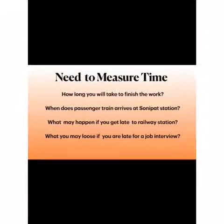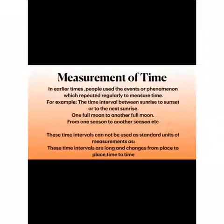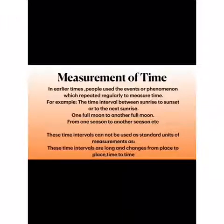For answering all these questions you need to measure the accurate time. The measurement of accurate time is very necessary in our day-to-day life, otherwise we will miss many opportunities and we will not be able to do any work in time. In earlier times, people used events or phenomena which repeated after a fixed interval of time to measure time — for example, the time interval between sunrise and sunset, from one full moon to another, or from one season to another. These time intervals cannot be taken as standard units of measurement because they are very long and change from place to place and time to time.